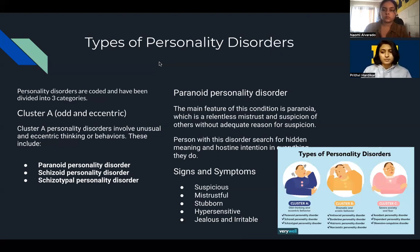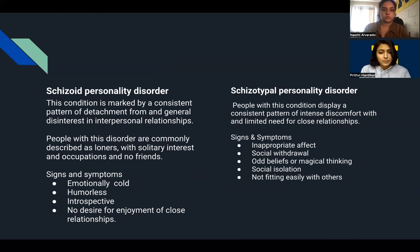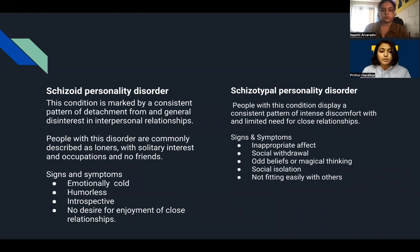Next is Schizoid Personality Disorder, which is marked by a consistent pattern of detachment and general disinterest in interpersonal relationships. People with this disorder have a mostly limited range of emotions when interacting with others and are commonly described as loners, sometimes with solitary interests and occupations, and sometimes no friends. Signs and symptoms include being emotionally cold, humorless, introspective, with no desire for enjoyment or close relationships.